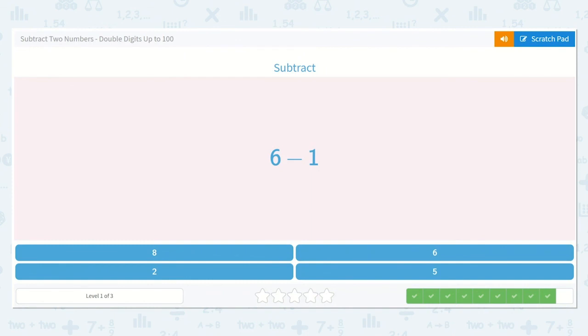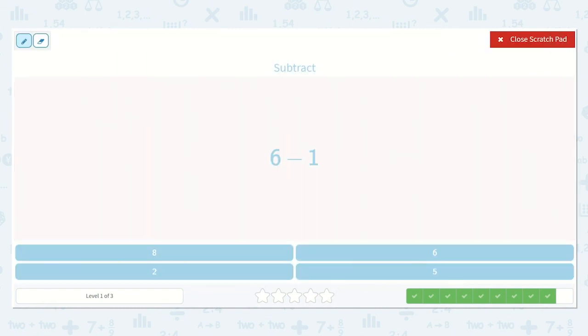Now we have 6 minus 1. I could draw dots for this, or I could look at it and think, well, if I drew 6 dots and then I crossed one of them off, I would just have 1 less than 6. What is 1 less than 6? The number right before 6. Yes, 5. So 6 minus 1 is equal to 5, which is right here.